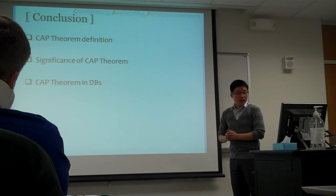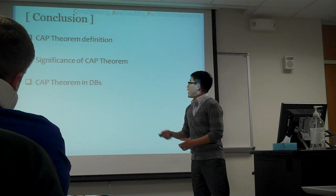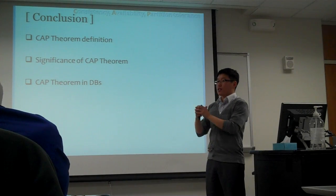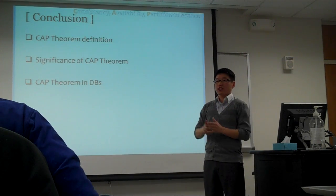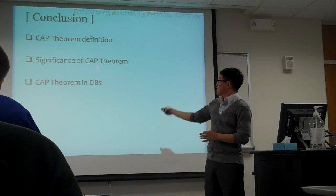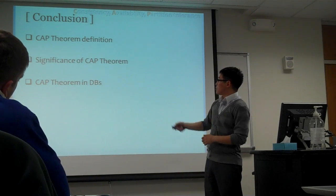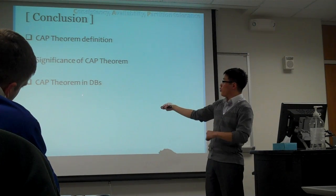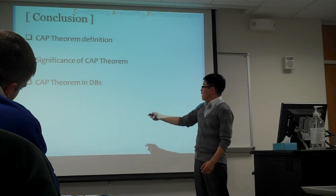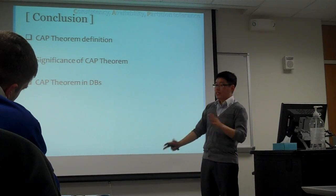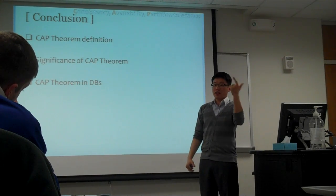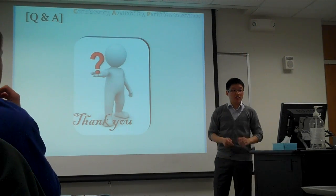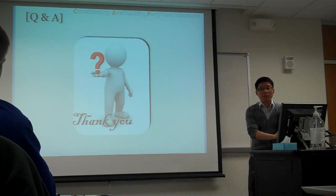Today I talked about what CAP theorem is, why the CAP theorem is important, and where it can be used. Basically, the CAP theorem states that it is impossible to have all three qualities at the same time. It helps system designers when they design their systems — that's why it is important to know what CAP theorem is. The CAP theorem can be used in many areas, like data storage systems and network systems. This is my presentation. Do you have any questions? Thank you.